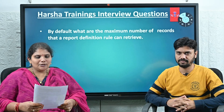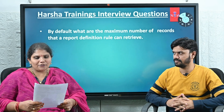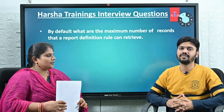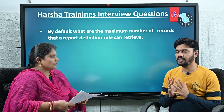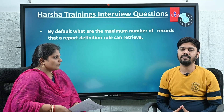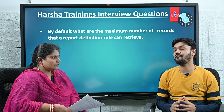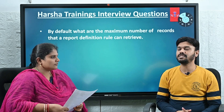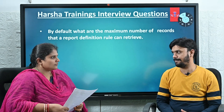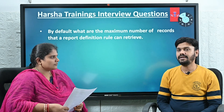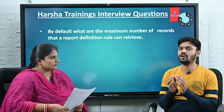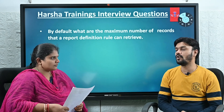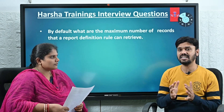Next question: by default, what is the maximum number of records that a Report Definition Rule can retrieve? A Report Definition Rule can retrieve a maximum of 500 records by default. This is specified under the Report Viewer tab, and those 500 records are loaded onto the clipboard in a page list format.